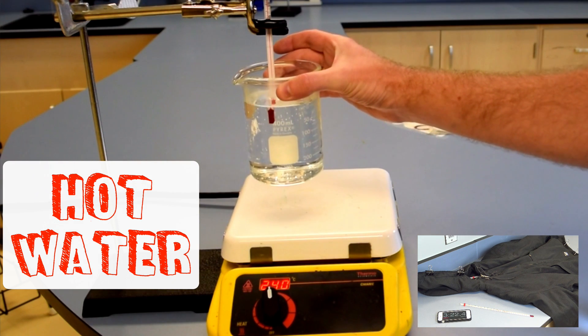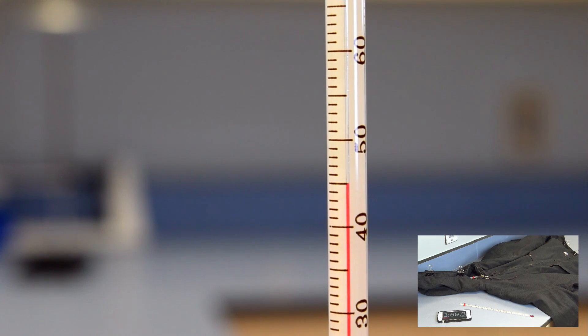When heat is transferred to the alcohol, it expands, causing it to rise in the thermometer. When heat is lost from the thermometer, the alcohol condenses and drops.